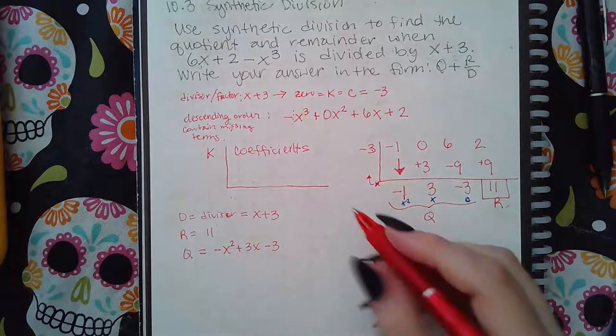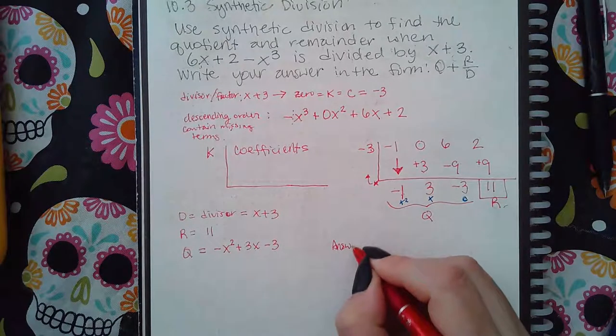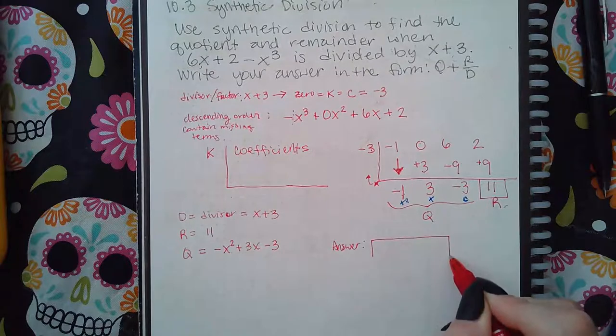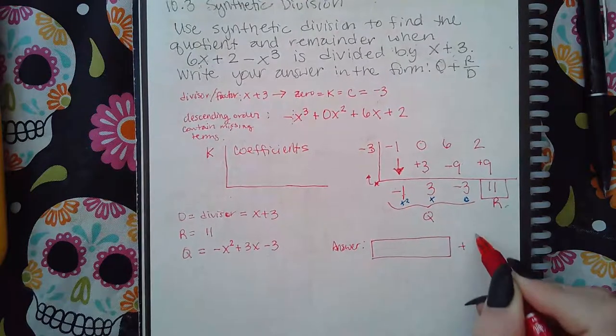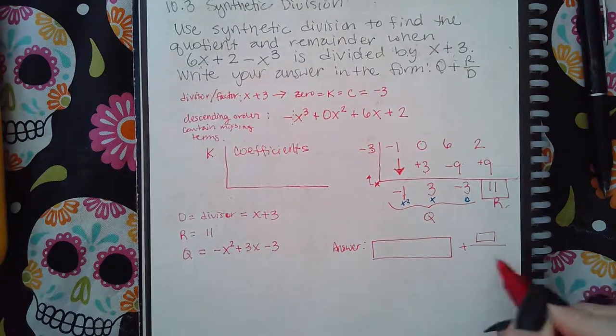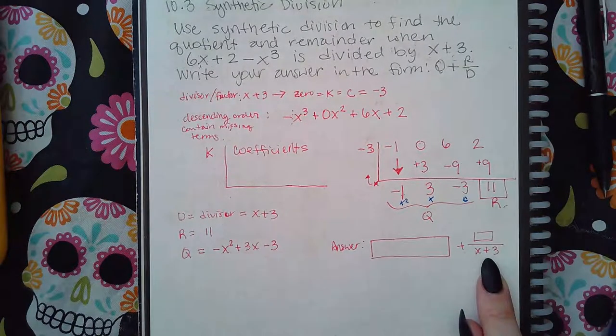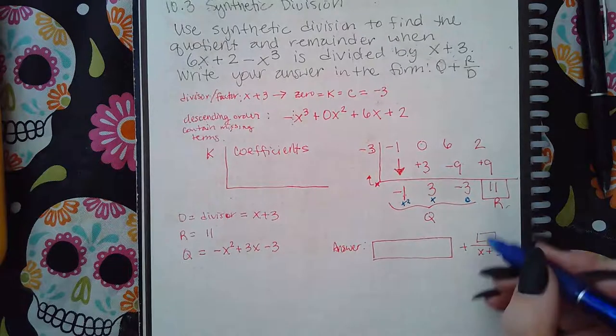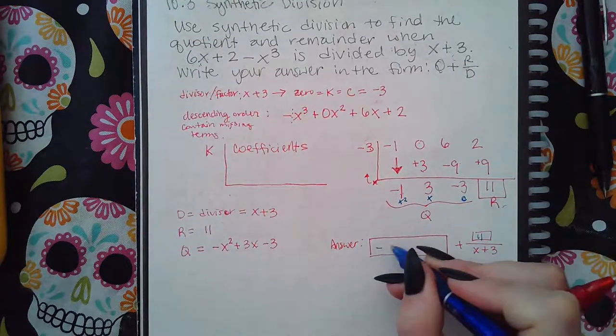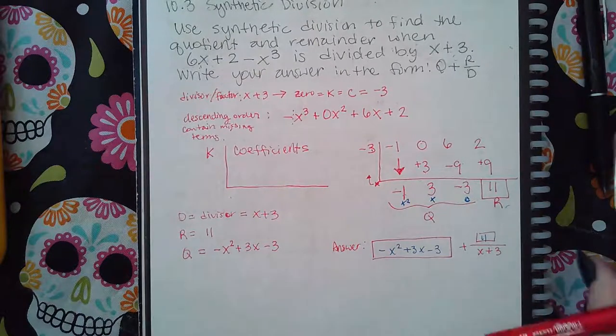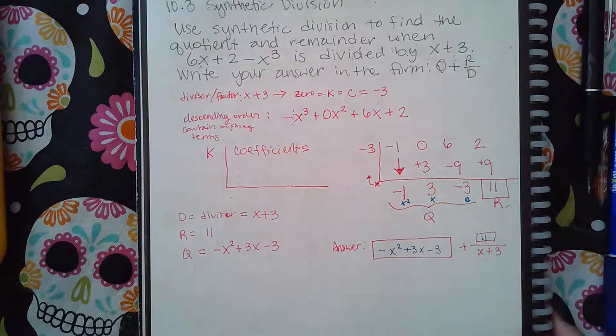Now, for the answer in Alex, it's going to be written like this. So they're already going to have the divisor written out for you. All you have to do is type in the 11 and type in the negative x squared plus 3x minus 3. And that's it.